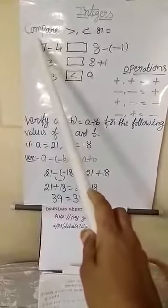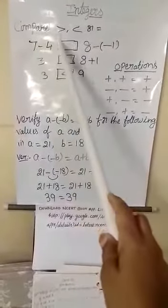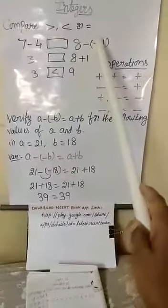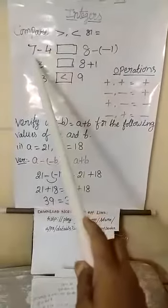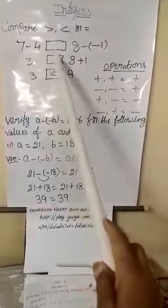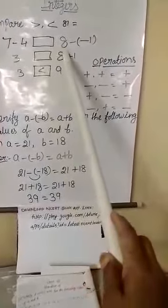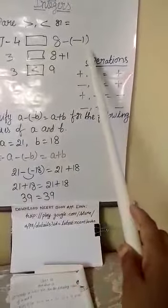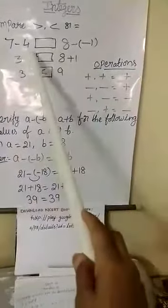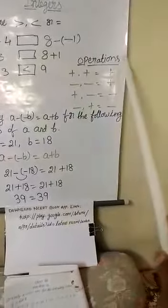Again we are saying about the comparison. Compare greater than, smaller than or equals to. The equation is 7 minus 4 or 8 minus minus 1 is greater, which is greater. For this, first of all, look the operations.